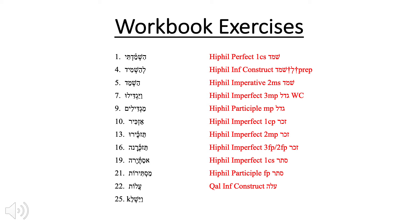Last but not least, what about number twenty-five? Number twenty-five is a Hiphil imperfect as well — a 3ms from shalak, meaning 'to throw' or 'to toss.' We know that this is a Hiphil because we have the patah underneath the yod. We also have the tsere underneath the lamed — again, the long I-class vowel. Let's move on to our next set of exercises.